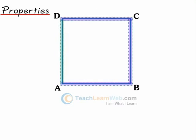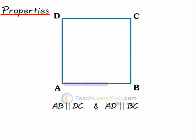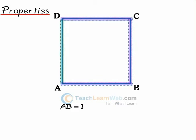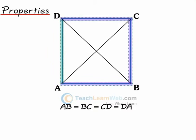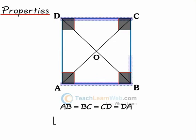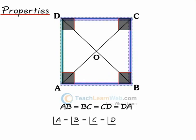Properties of a square: its opposite sides are parallel — AB is parallel to DC and AD is parallel to BC. All its sides are equal — AB = BC = CD = DA. Each of its angles measures 90 degrees — angle A = angle B = angle C = angle D = 90°.